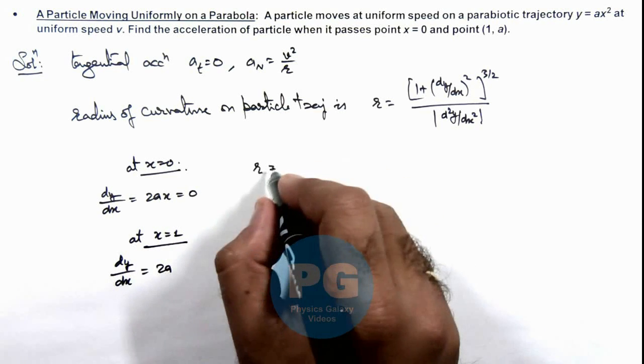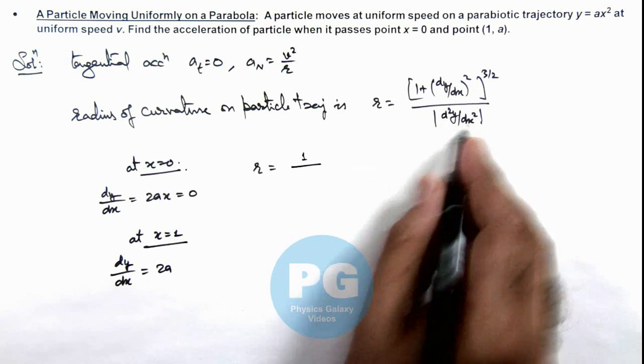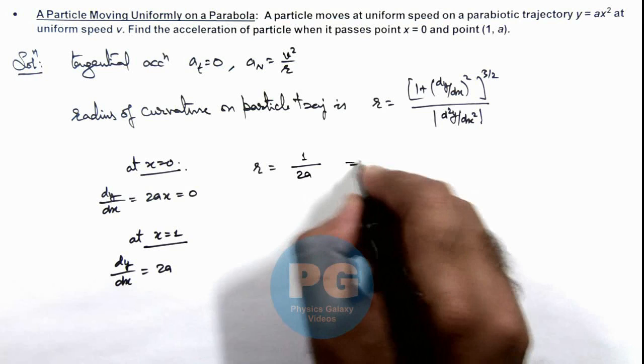Now in this situation, if we calculate the radius, this will be 1 divided by d²y/dx² which is 2a here. This implies...